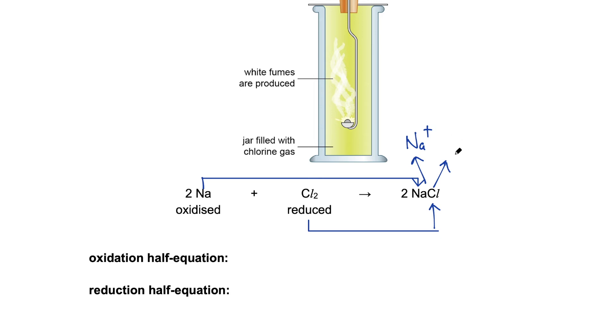Because this is an ionic compound, you actually have Na plus and Cl minus. So sodium, the metal, loses electrons while chlorine, the non-metal, gains electrons. So reduction is the gain of electrons while oxidation is the loss of electrons.